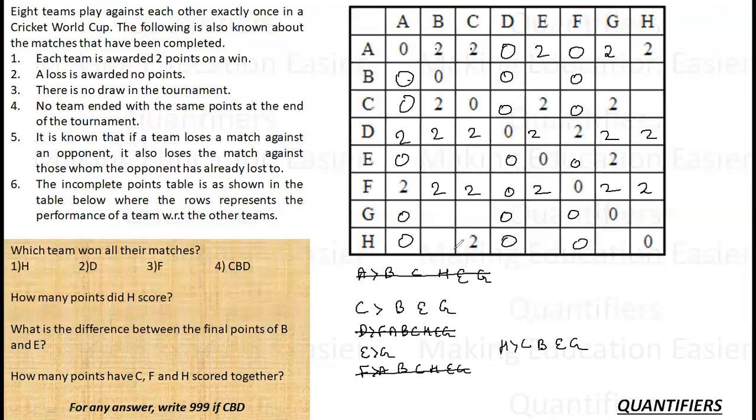So, this is what I can make out finally out of it. For B, we have very less information. So, let's leave B up to all. C has beaten B, E, G. D has beaten all the teams. So, wherever D is, this is 0, 0, 0, 0, 0, and 0. F has beaten everyone except D. So, where is F row? Except for D, everything else will be 0. F has beaten H. Yes, F has beaten H. G, I have very less information. Let's leave it. H has beaten C, B, E, G. So, 2, 4, 6, and 8 points. 2, 4, 6, 8, 10, 12 points for F. 14 points for D.